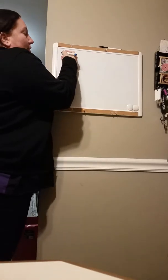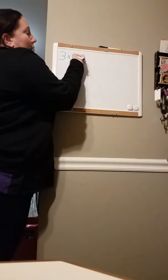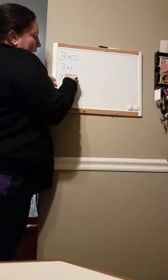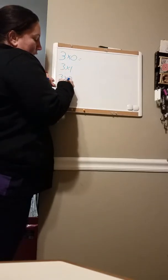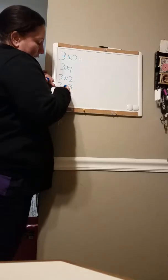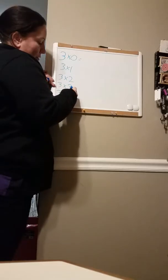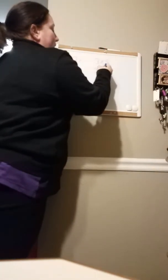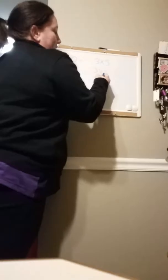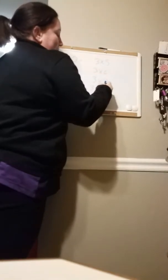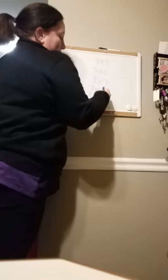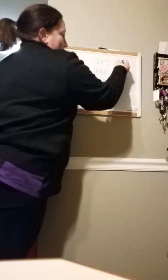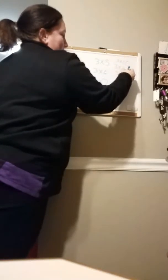We're going to start with three times zero, three times one, three times two, three times three, three times four, three times five, three times six, three times seven, three times eight, three times nine, three times ten, three times eleven, and three times twelve.